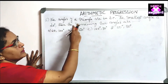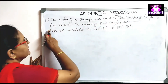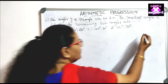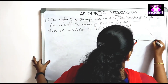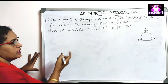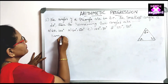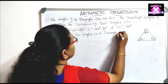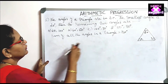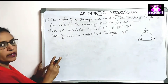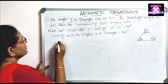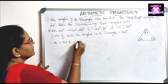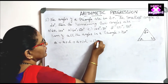The next question: the angles of a triangle are in AP and the smallest angle is 20 degrees. Find the remaining two angles. We know the sum of all angles in a triangle equals 180 degrees. Since the angles are in AP, we write them as A, A plus D, and A plus 2D.